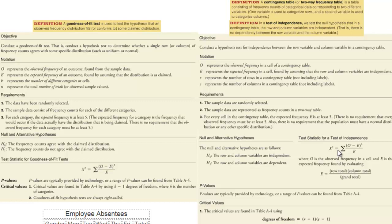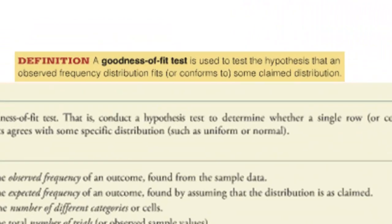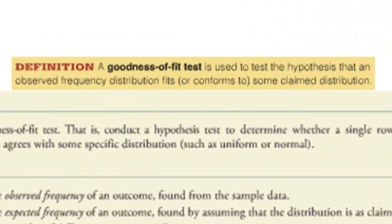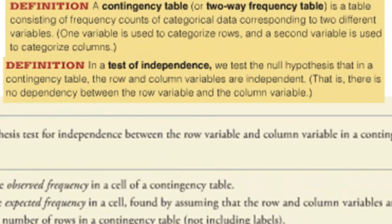I put these side by side so you can see how similar they are. By definition, a goodness of fit test tests the hypothesis that you have some observed frequency distribution and you want to see if it fits some claimed distribution. Whereas a contingency table, or what is called sometimes a two-way frequency table, is kind of the same thing as the difference between a one-way ANOVA and a two-way ANOVA. With the two-way frequency table or contingency table, you have frequency counts that are categorized two ways.